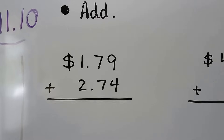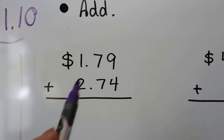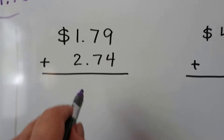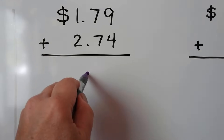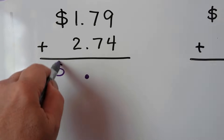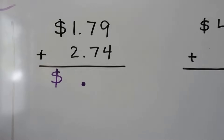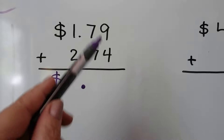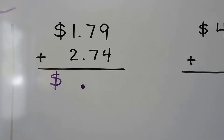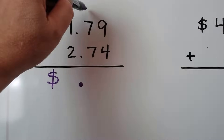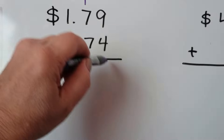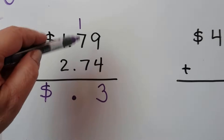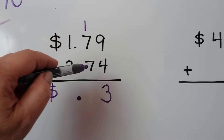It's the same thing as adding 179 plus 274. We just have to remember there's going to be a decimal point that comes straight down right here and we're going to need a dollar sign — that's the only difference. So let's add the ones place first. 9 plus 4 is 13. We need to regroup the 1 and put the 3 down.